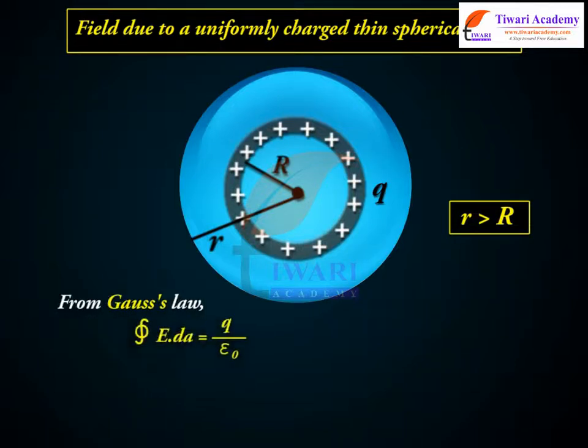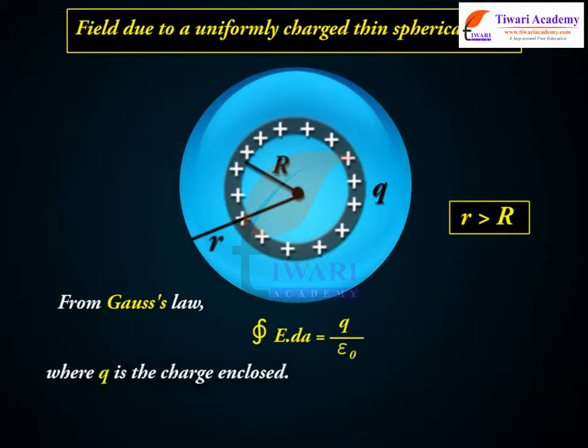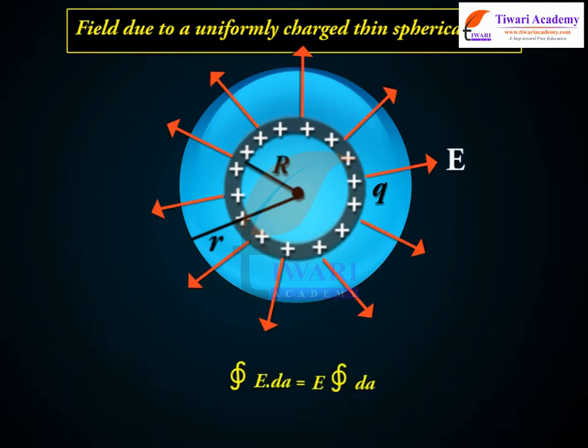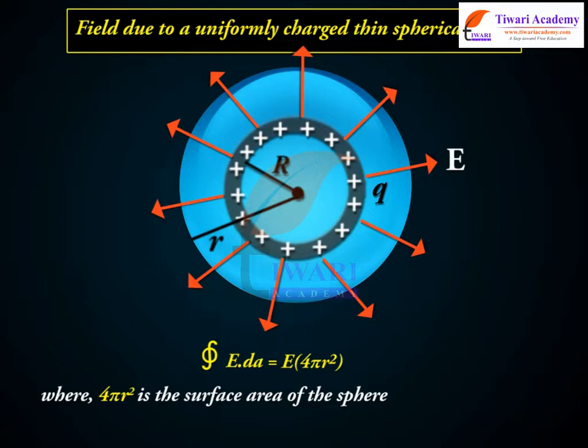From Gauss's Law, closed contour E dA equals Q by epsilon naught, where Q is the charge enclosed. Since electric field points radially outwards, we have closed contour E dA equals E closed contour dA. Also, as discussed, magnitude of E is constant over Gaussian surface, closed contour E dA equals E times 4 pi r square where 4 pi r square is the surface area of the sphere.